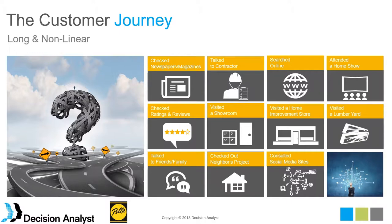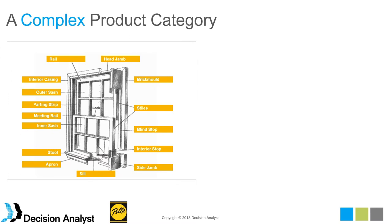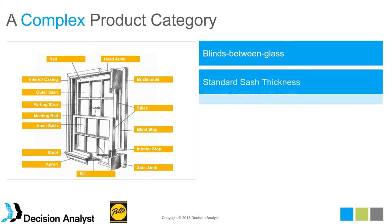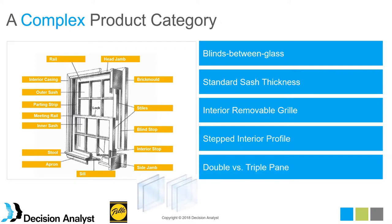Given that complexity and industry dynamics, we had to design the study accordingly. It was a three-step process. The first step was doing rigorous qualitative research — IDIs or depth interviews done using a webcam phone methodology — so we could see all of our interview participants live, hear their reactions, and see the expressions on their faces. If you're not a builder or windows installer, you're probably not familiar with a lot of the features for residential windows, like head jamb, interior profiles, standard sash thickness, and removable grills.